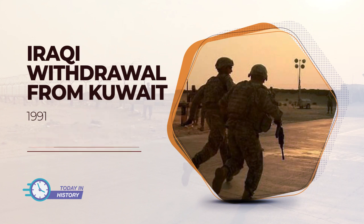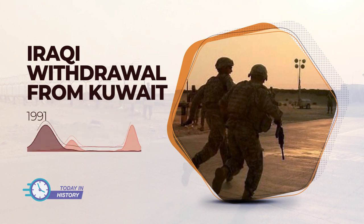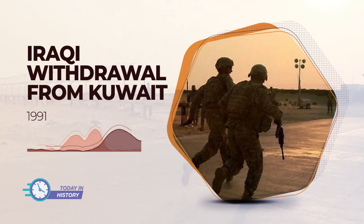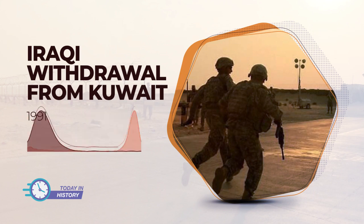Despite the outcome of the war, Saddam Hussein remained in power, and the United States did not intervene in the face of the repression of the internal revolts that arose in Iraq against the Hussein dictatorship — of the Kurds in the north and of the Shiites in the south. From that moment on, Iraq was subjected to a UN sanctions regime conditioned on the dismantling of its supposed chemical and nuclear weapons construction potential, and part of its northern and southern territory became a no-fly zone patrolled by British and American planes.